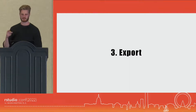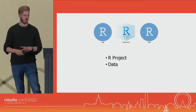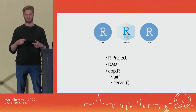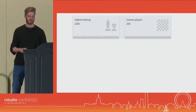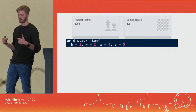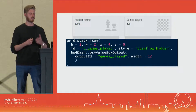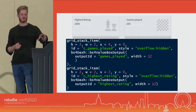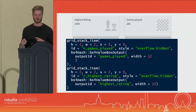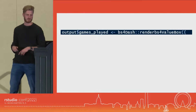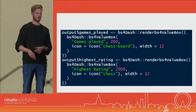As soon as you're happy with how it looks, export it. When you export, you get three files: the R project, the data you loaded in as an .rds file, and the app.r file. In the app there's always a UI and a server. Internally, we use the gridstacker package — we add a grid stack item, give it a height, width, X, Y, an ID, some styling, and inside we put a value box output. This is 100% generated by the Dashboard Builder, and the same applies to the server, which renders a value box with a title, value, icon, and width — again, 100% generated.